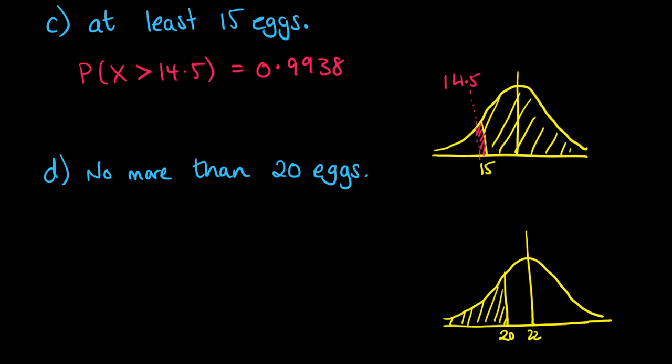So we're going up to and including. So we need to extend our line this way. So we're going 20.5 so that when we go everything up to 20.5, we will have included that 20.